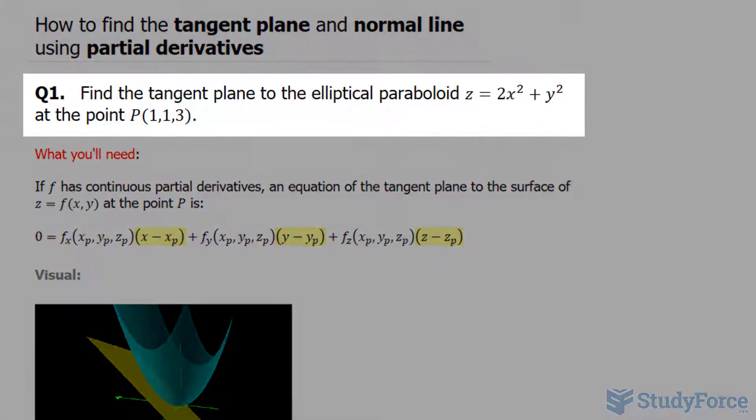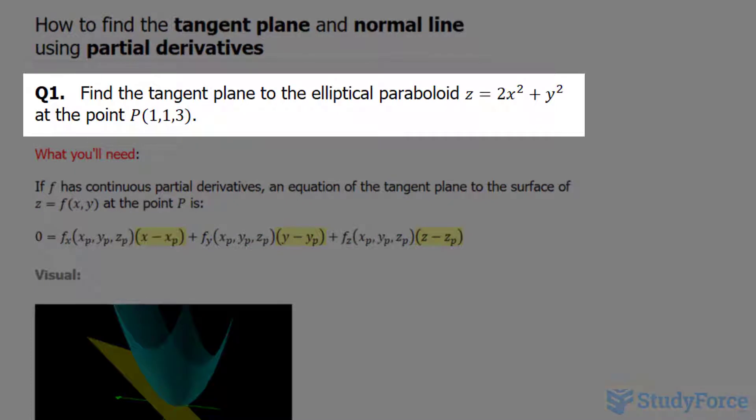Question 1 reads: find the tangent plane to the elliptical paraboloid z equals 2x squared plus y squared at the point (1, 1, 3).